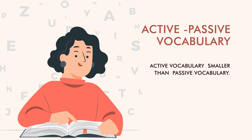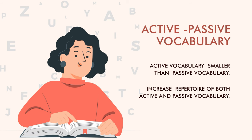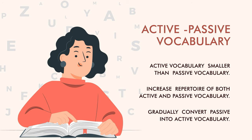Those which you are very comfortable using day to day is your active vocabulary, and those you can sort of guess the meaning of but cannot confidently use is your passive vocabulary. You will notice that your active vocabulary is much smaller than your passive vocabulary. Our job as English language students is to increase the repertoire of both active and passive vocabulary, and convert the passive into your active vocabulary.